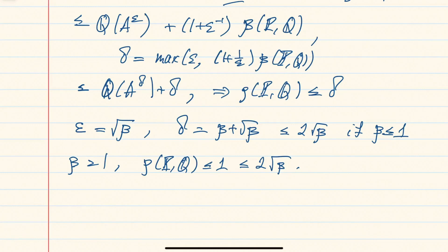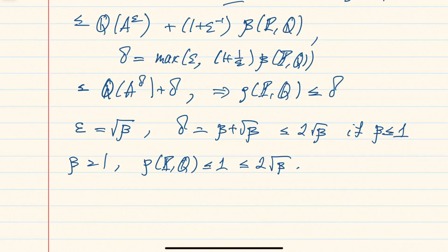Using this approximation of an indicator function by a bounded Lipschitz function, we get directly from the definitions this comparison between the two metrics. In the next section on Strassen's theorem, we'll have an inequality in the other direction where the bounded Lipschitz metric is dominated by the Lévy-Prokhorov metric, but that proof will be much more complicated. For now, this finishes the proof of the theorem.